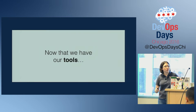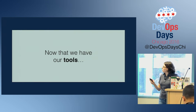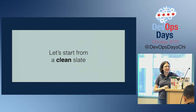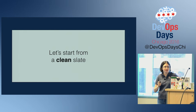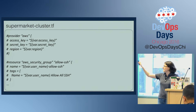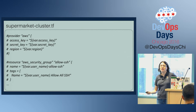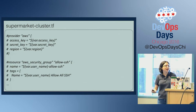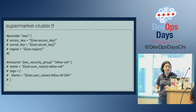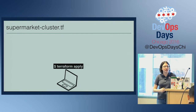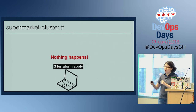Now that we have our tools, we're going to start from a clean slate. We need to figure out the bare minimum we need for our tests to run first. What I like to do is comment out the entire config file and rebuild it piece by piece. At this point, with everything commented out, if I ran Terraform apply nothing would happen — this is a good starting point.